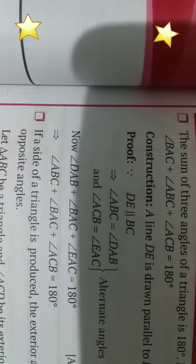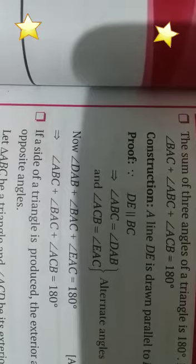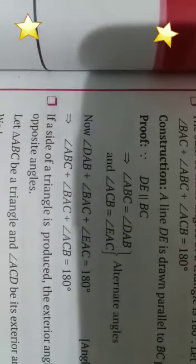Hello students, let us continue our topic of lines and angles. In our previous class we completed the exercise, and today we will learn a theorem. Our theorem is that the sum of three angles of a triangle is 180 degrees. We have been learning this from class 5, and in this class we will prove it.